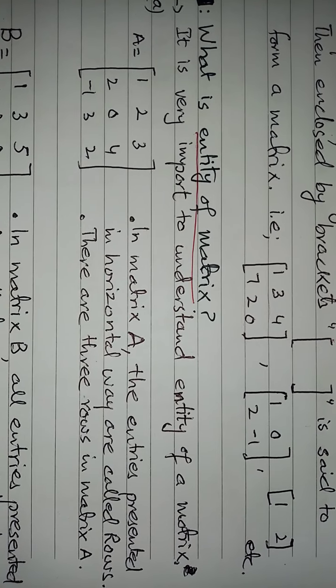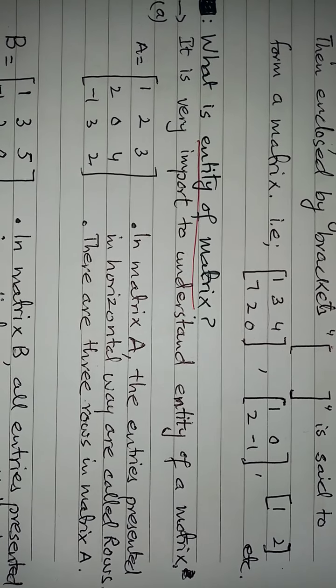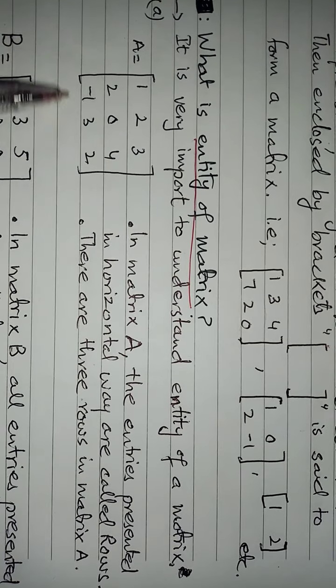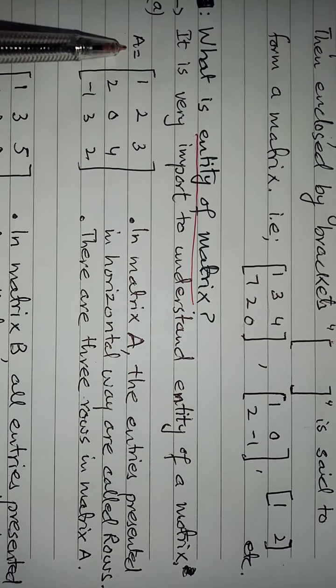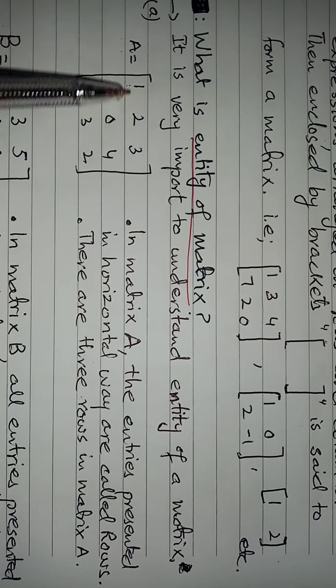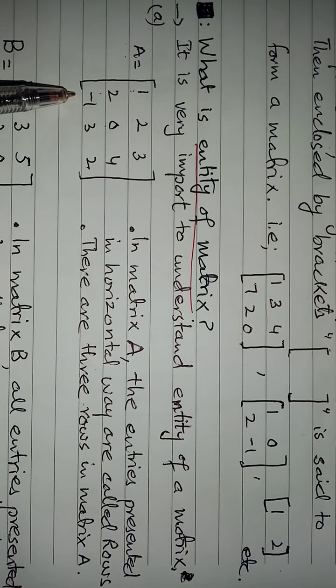Entity of matrix - what is the existence of matrix. If we observe, this Matrix A is given to us which has these elements: 1, 2, 3, 2, 0, 4, minus 1, 3, 2.